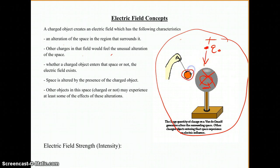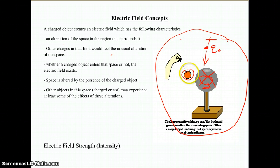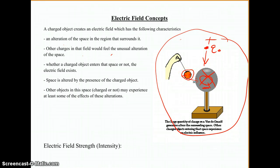This ball doesn't have to be charged to get pulled toward the Van de Graaff. What might be happening is the atoms in the surface of the ball are being polarized, so we get a negative charge at one surface and a positive charge on the other side. That's going to cause the ball to be altered, and then it's going to feel the force from the Van de Graaff and start to move toward it.